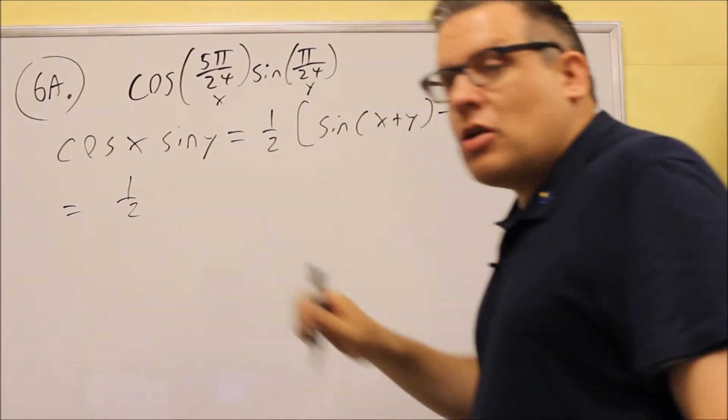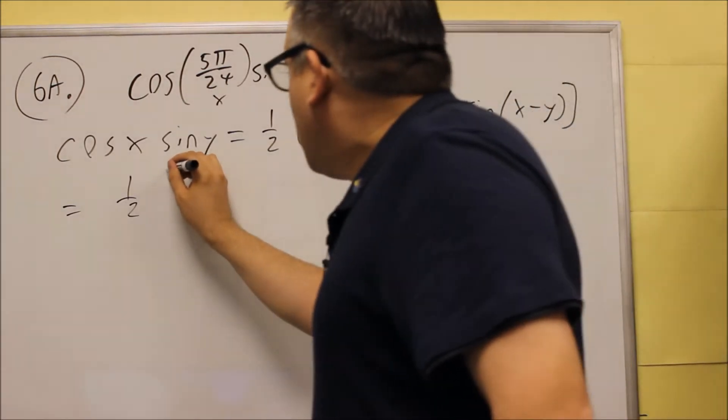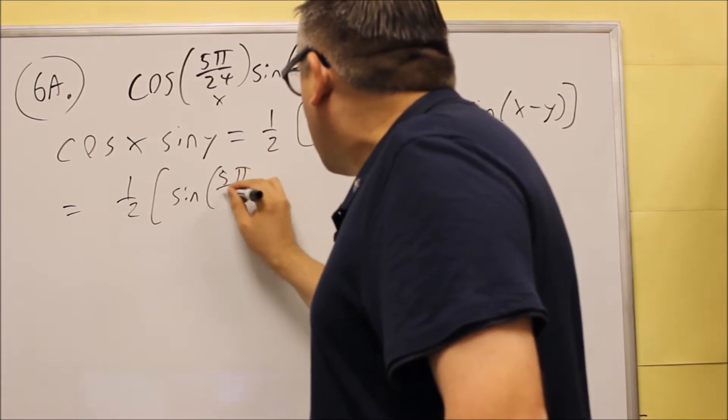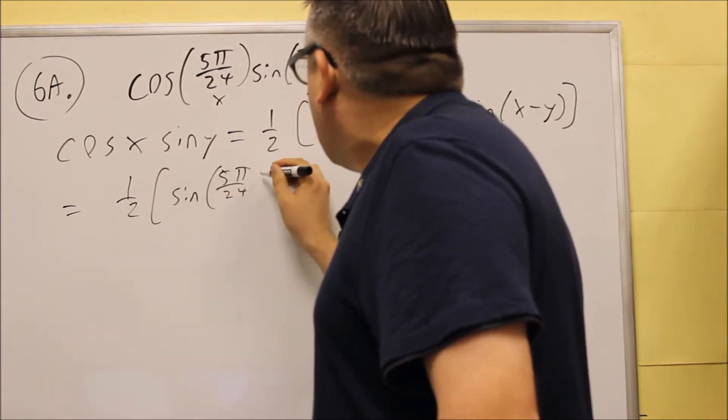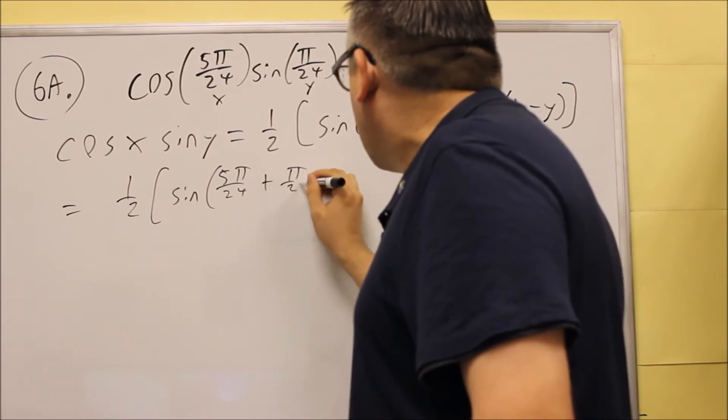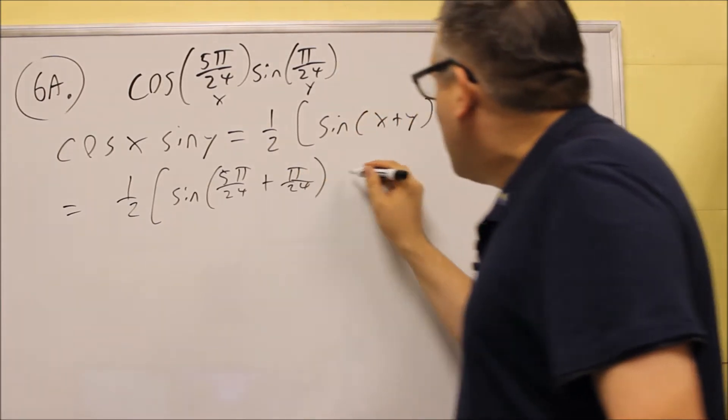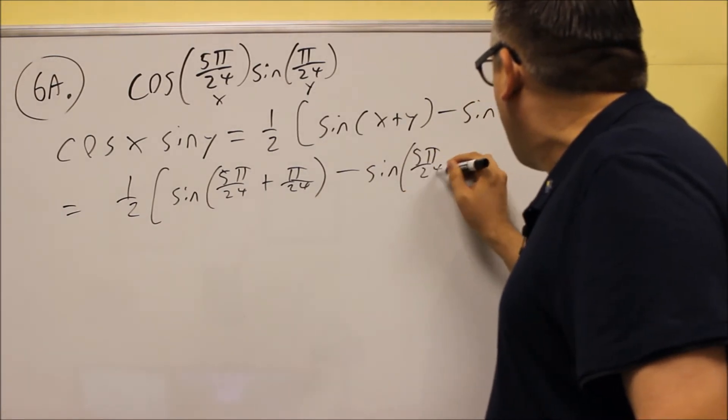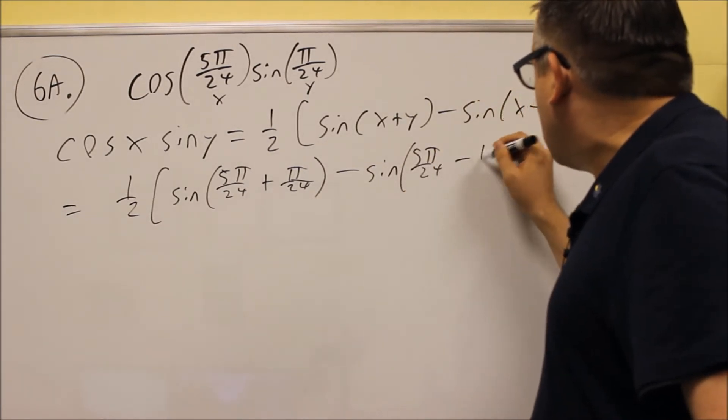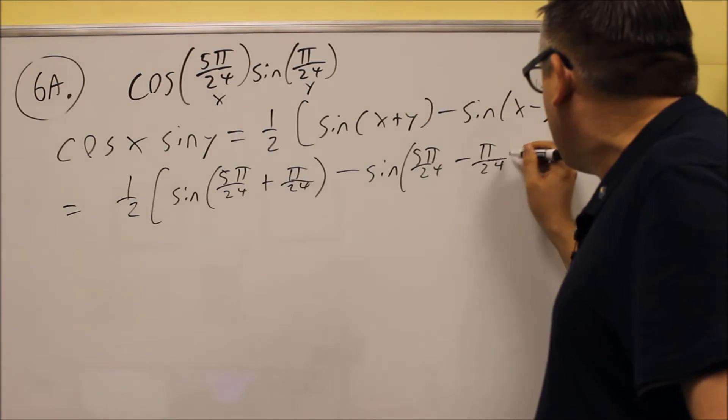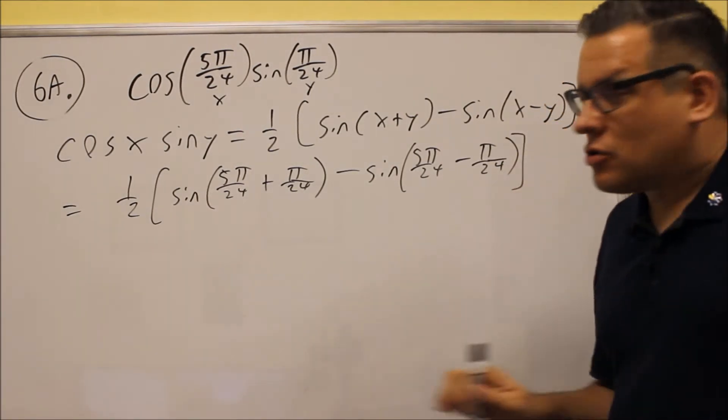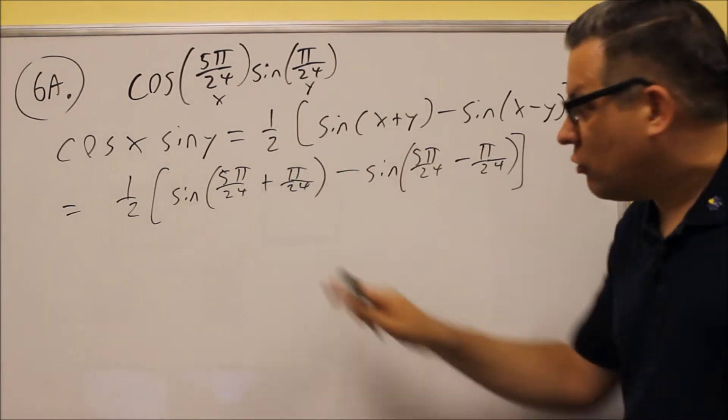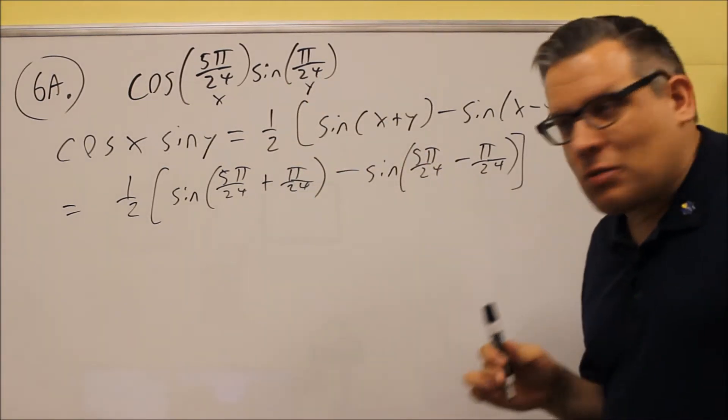So you'll have all this is going to be equal to one-half, and then inside here we have sine of 5π over 24 plus π over 24, and then minus sine with 5π over 24 minus π over 24. Okay, and we have the bracket on the end here. So we first start by plugging in the x and the y from the original one. We plug that in here, and then we're going to simplify it.